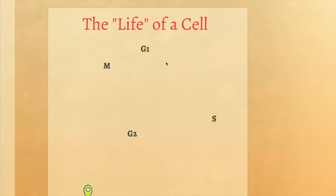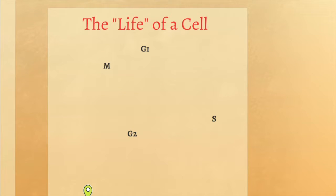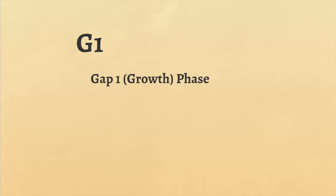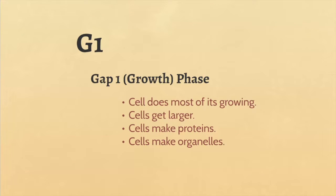Now let's talk about the life cycle of a cell — we call this the cell cycle. Every cell in your body, at least your somatic cells, go through four stages throughout their life: G1, S, G2, and M. It's a cycle, so it repeats over and over again. G1 stands for the gap phase, or the growth phase, where cells do most of their growing — the cells get larger, make proteins, make organelles. The G1 phase is basically where the cell does most of its living: reading DNA, making proteins, getting bigger.